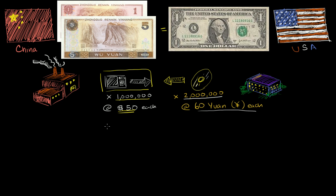So let's think about what the demand for each of the currencies will be from each of the manufacturers. So the Chinese manufacturer over here is going to sell a million units at $50 each. So he's going to get $50 million in revenue. And he is going to want to convert that $50 million into yuan.